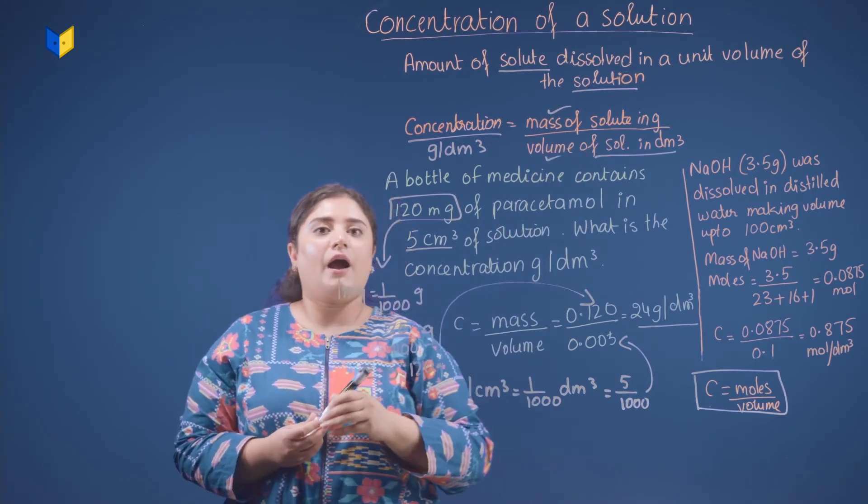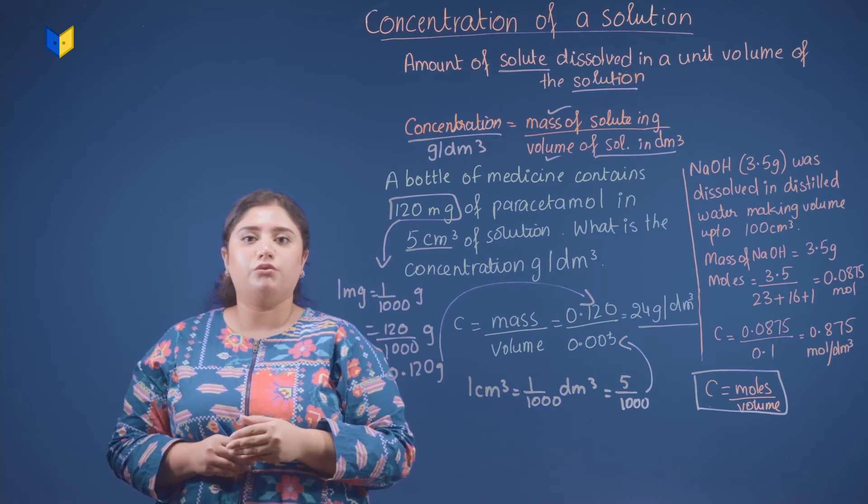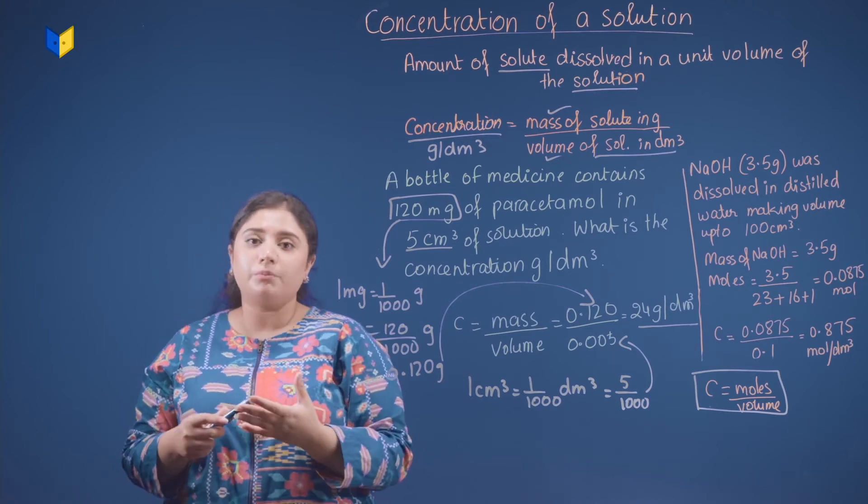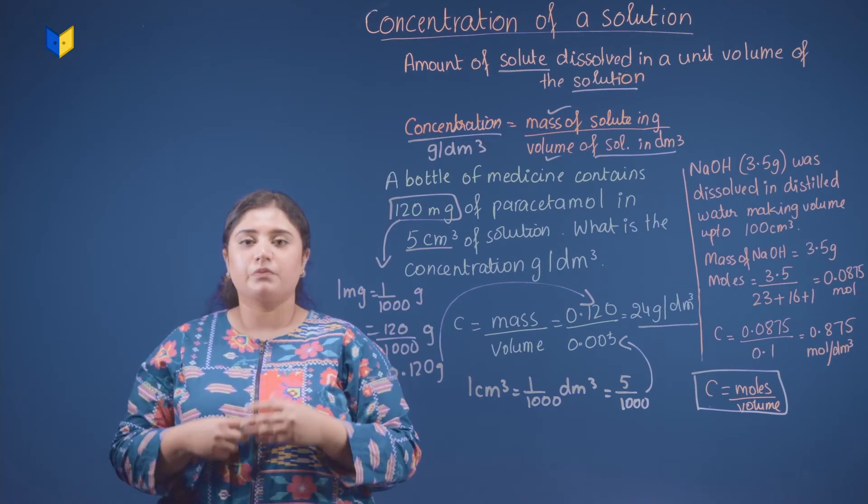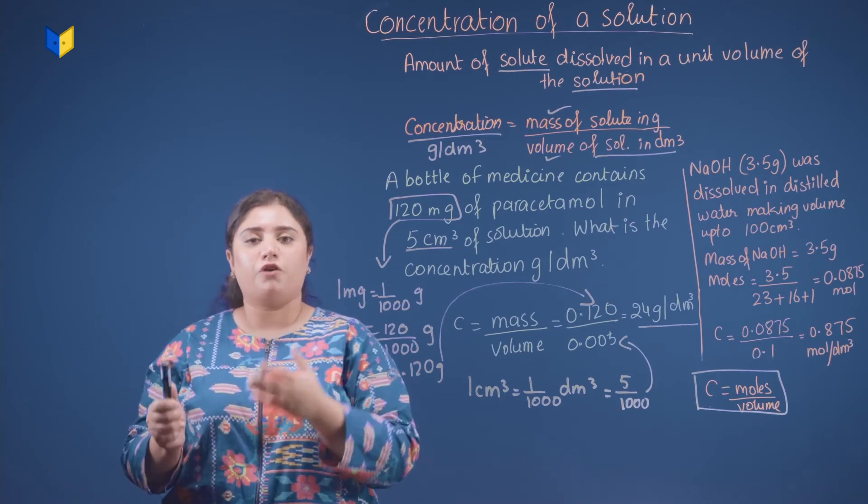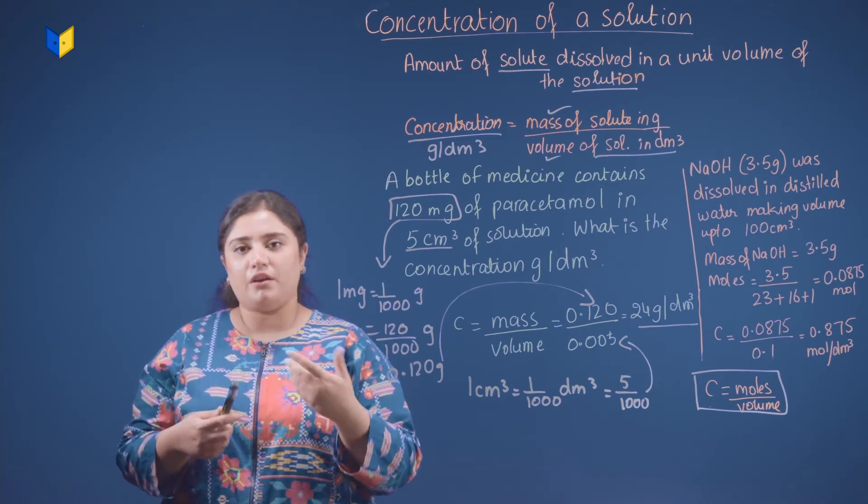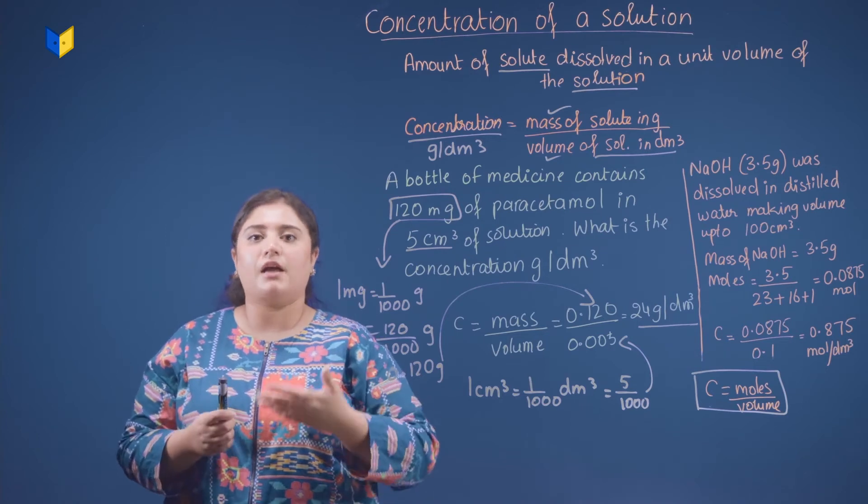If you use the other formula, if you have concentration given and volume given, you can find out moles. So this is the trick of it. You can rearrange the formulas and you can find out various unknown variables that you have to use in the questions.